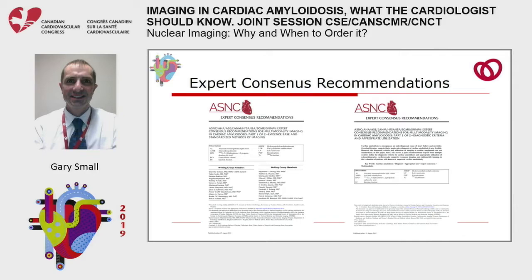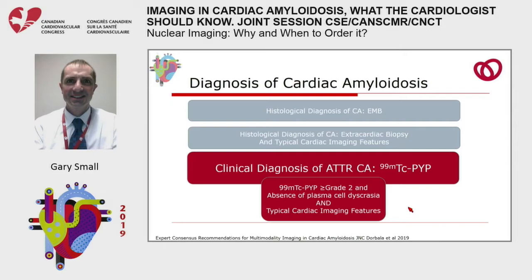These findings are incorporated into expert recommendations including an imaging review and appropriate use criteria summary. We are now in an era of making a diagnosis without biopsy. In the absence of a monoclonal antibody on serum or urine, with typical cardiac imaging features and myocardial uptake greater than grade 2, we can now make a diagnosis of ATTR amyloid without a biopsy.